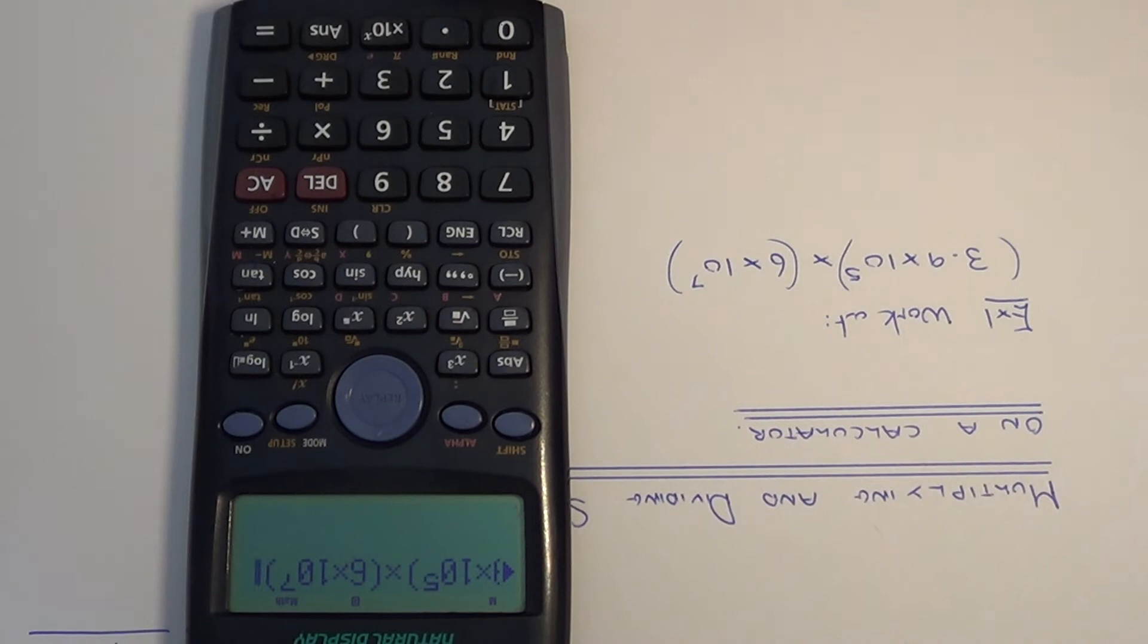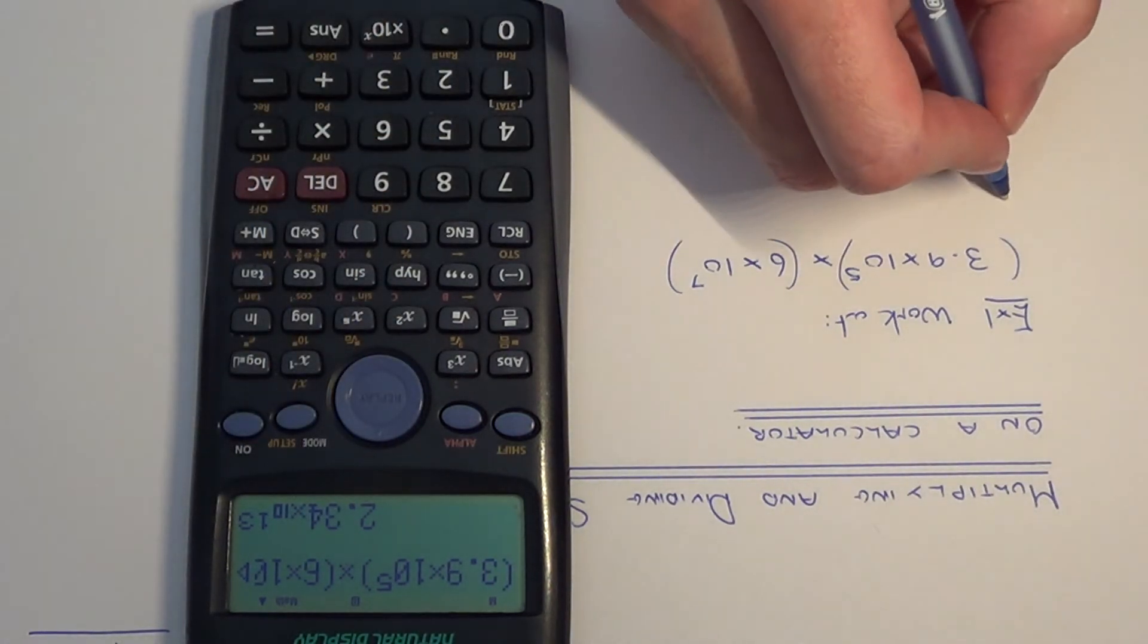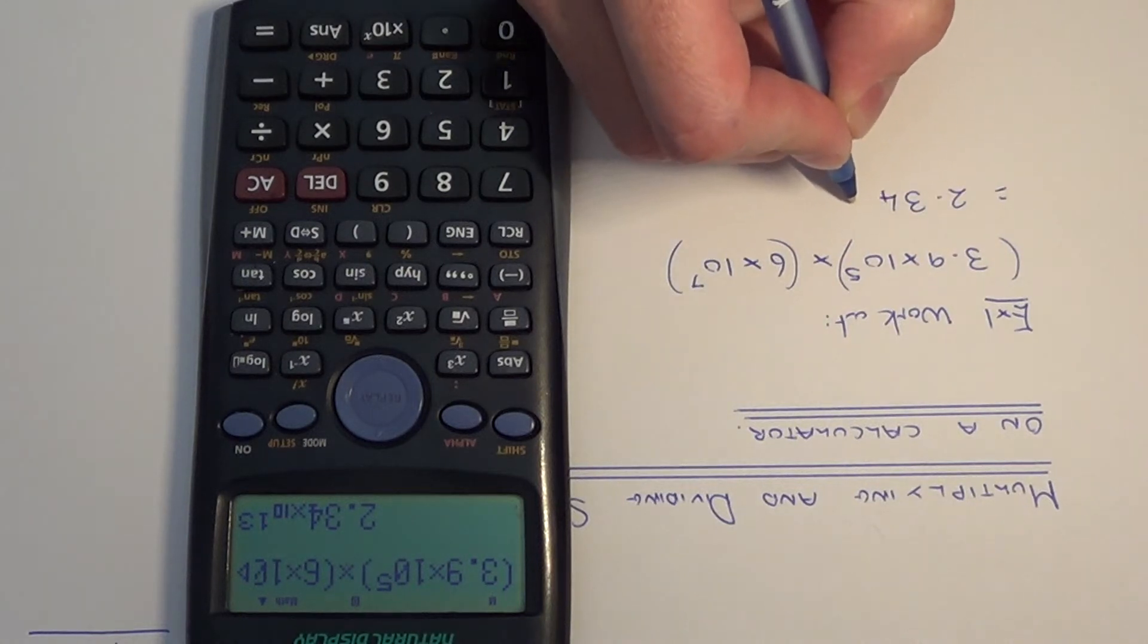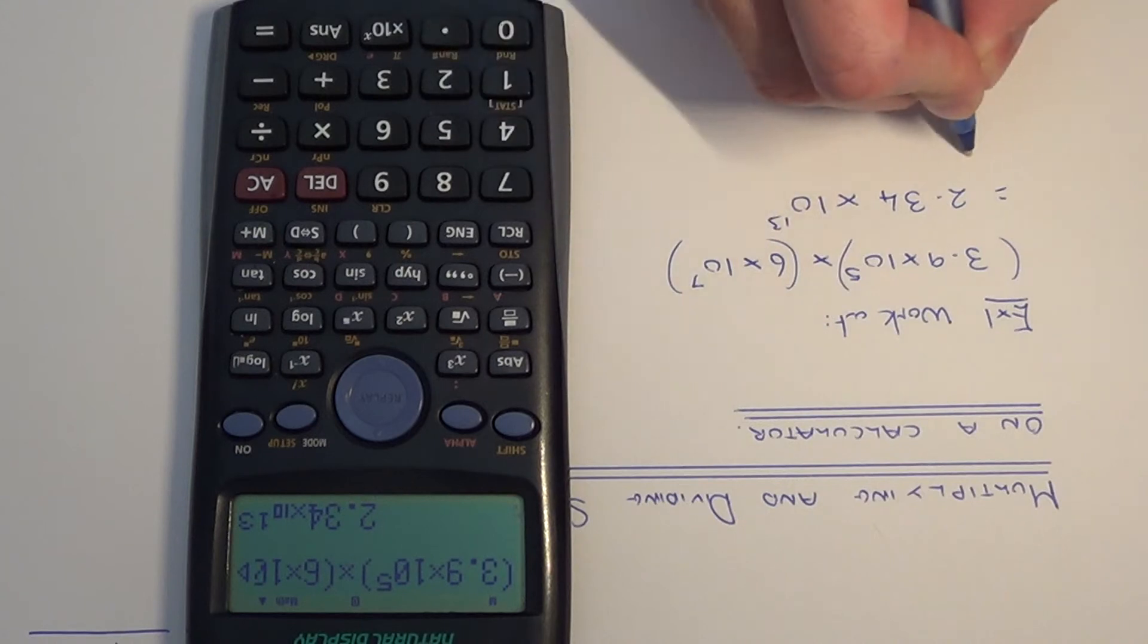It is written down exactly as it appears on the page there. If we hit equals, the calculator has written it in standard index form for us. We just need to copy that down, so it is 2.34 times 10 to the power 13.